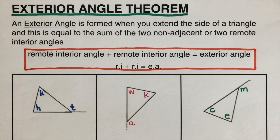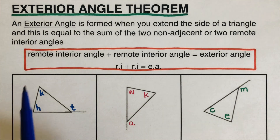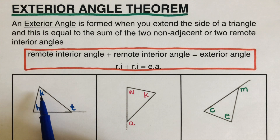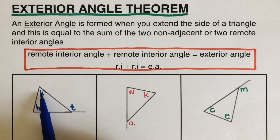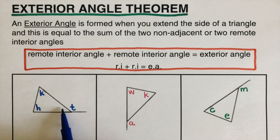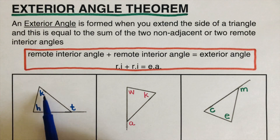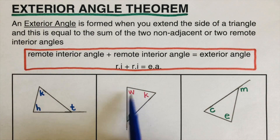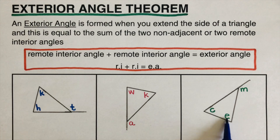We also have another term: the remote interior angle. When we say interior, it is on the inside. H and K are interior angles, and they're called remote because they are not located next to T. So H and K are remote interior angles. W and K are remote interior angles, and C and E are remote interior angles.